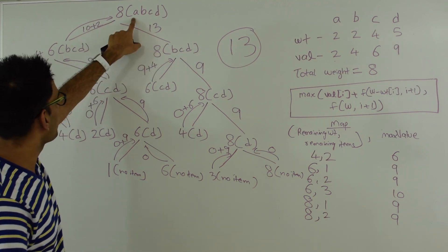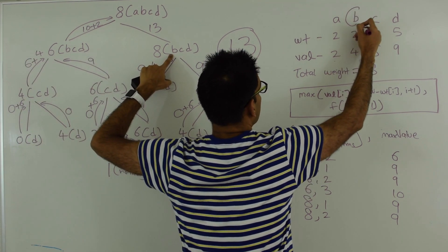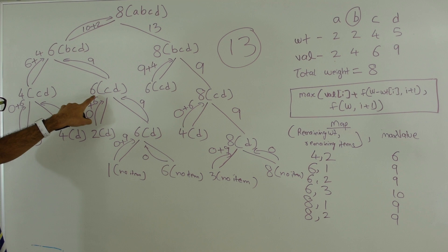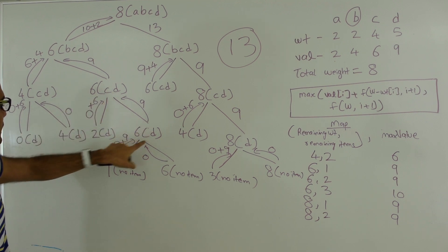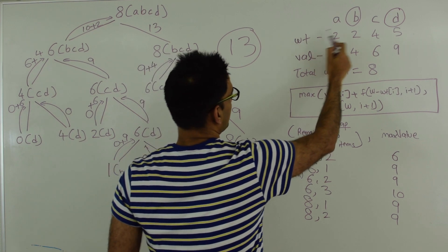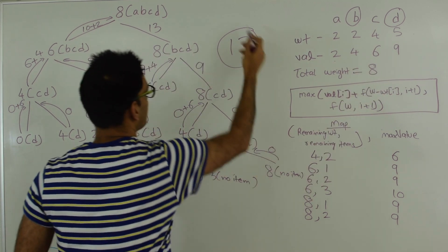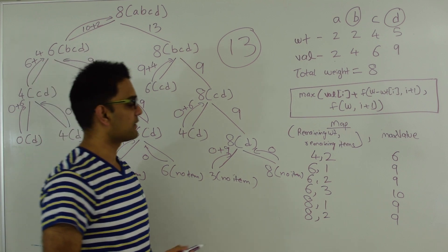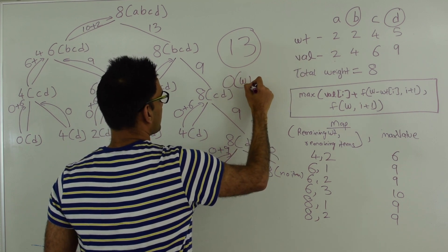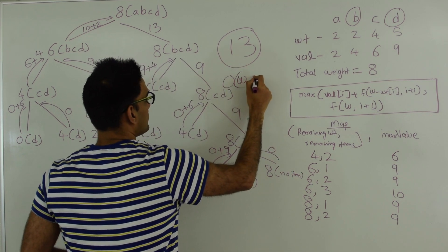At this point we check the maximum of 12 and 13, which is 13. So 13 is the total value you can get on this example. Since we moved right we didn't pick A; we moved left so we picked B; and from weight 6 with C and D, we didn't pick C and did pick D. So B and D are selected: their combined weight is 7 which is less than 8, and their combined value is 4 plus 9 = 13. The time complexity with memoization is O(W × N) — total weight times number of items.